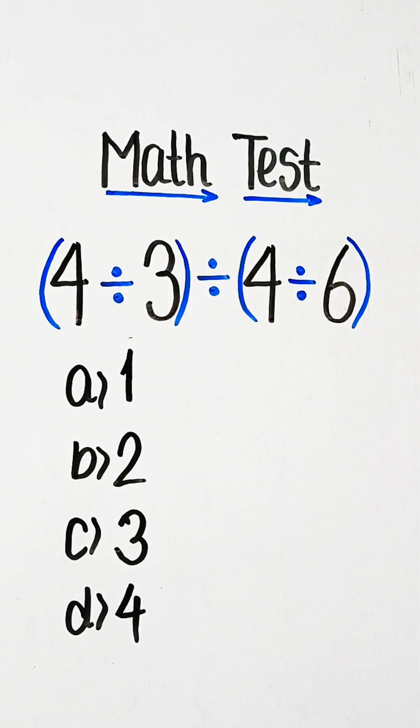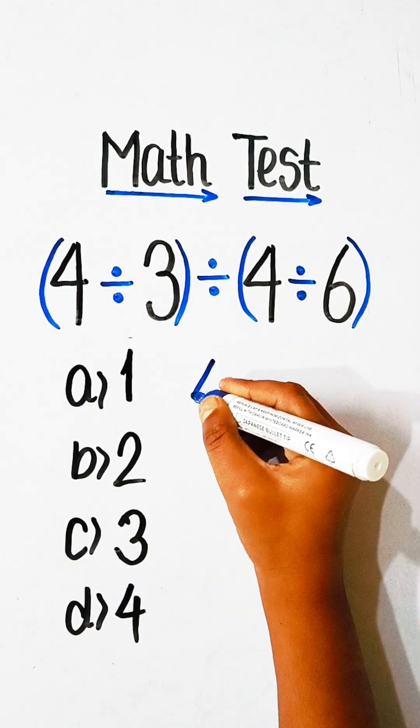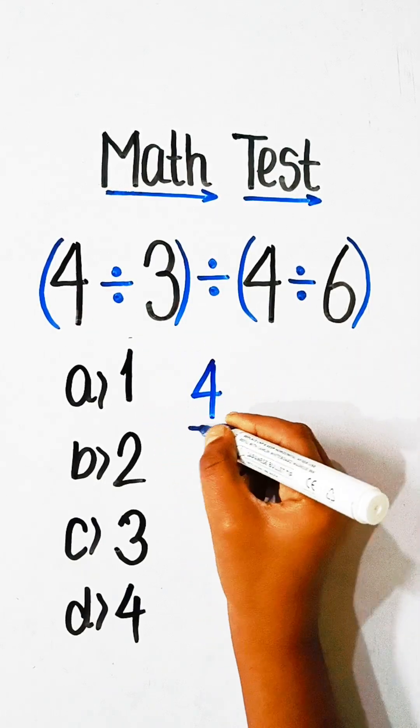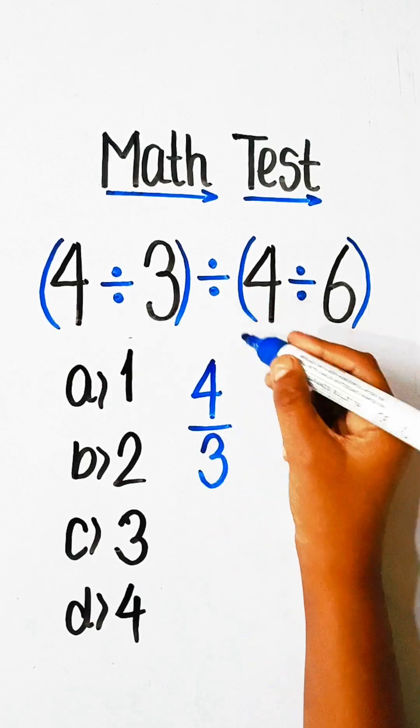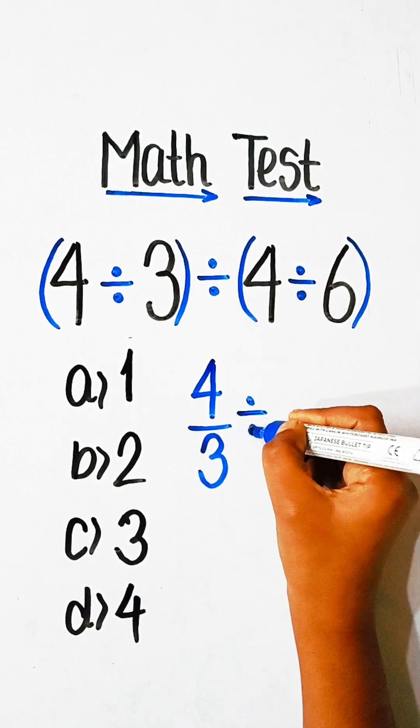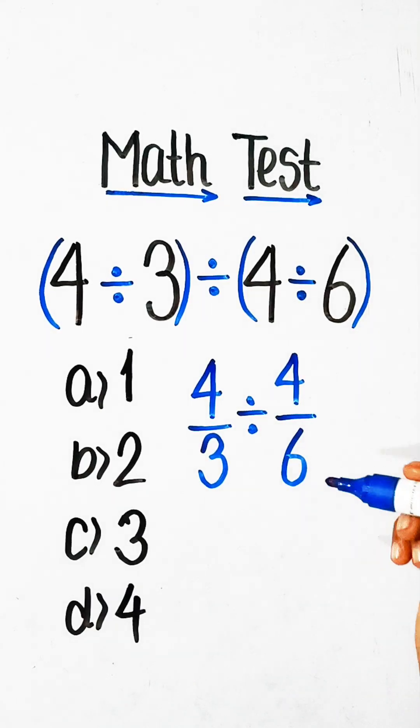So let's solve this. This equation can be written as 4 upon 3 divided by 4 upon 6.